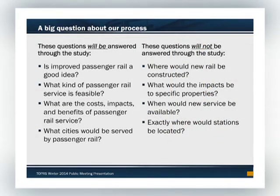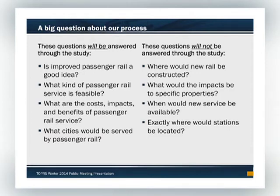This study is looking at whether passenger rail is a good idea for this corridor, what type of passenger service, what the benefits would be to people living in the corridor, and what cities would be served. What the study is not doing — because it's a planning-level study, not a project-level study — is determining when a new line will be constructed, what specific properties would be affected, what the exact alignment is, when this would be built, or the exact location of stations in cities. We're just determining which cities would best be served.